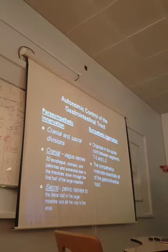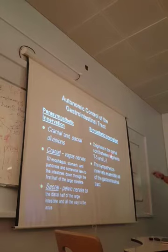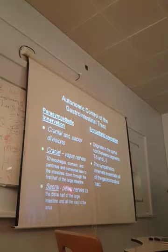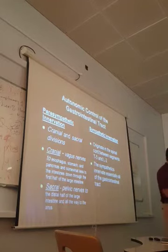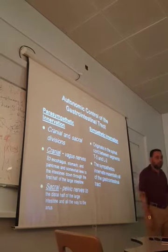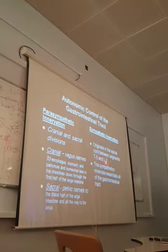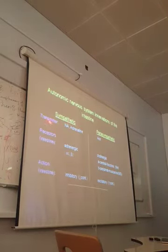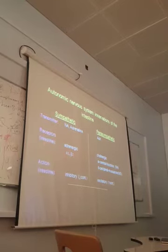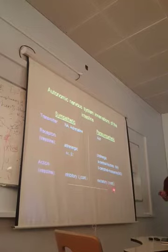Parasympathetic innervation is craniosacral and sympathetic innervation is thoracolumbar - between D5 and L2. The parasympathetic is essentially the vagus nerve, which innervates up to the first half of the large intestine, and the sacral supply covers the second half ending in the anus. The sympathetic essentially inhibits the GI tract. The transmitter for sympathetic is norepinephrine with alpha-1 and beta-2 receptors; for parasympathetic it is acetylcholine with nicotinic and muscarinic receptors. Sympathetic decreases contractions, parasympathetic increases contractions.